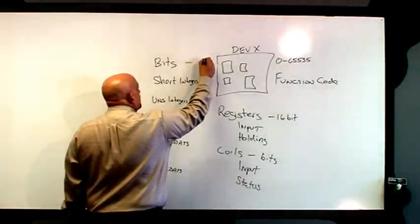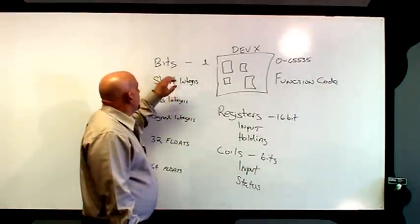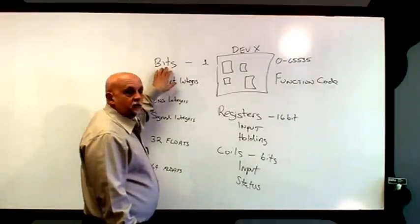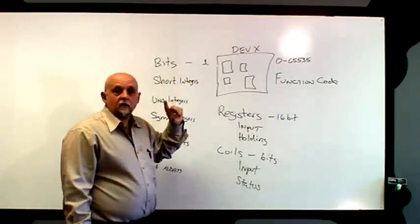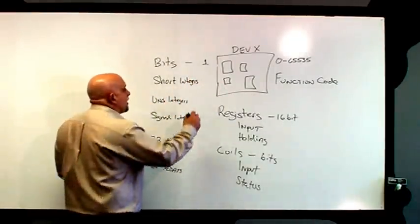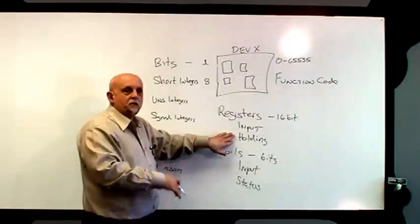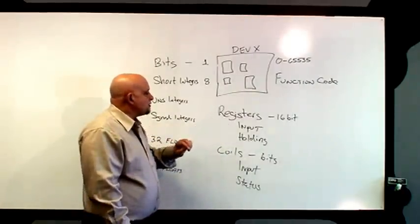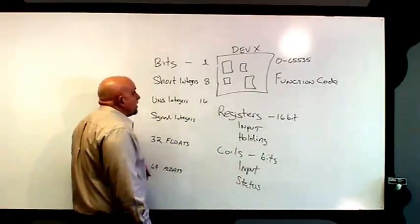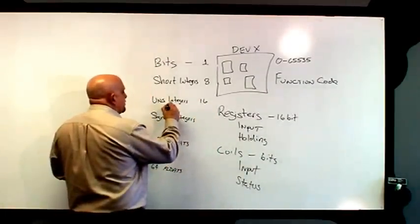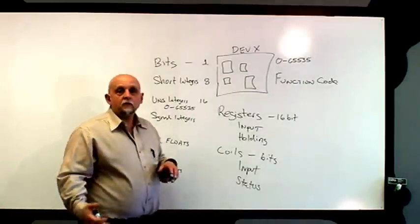Bits, of course, are single-bit and easily map into the coil space. So if you've got something like a relay you're going to turn on and off, you can represent it as a space a Modbus master can access by just allocating a coil — no problem. Short integers are actually 8 bits, so they fit into a register with the top half of the register always being zeros — no big deal. Unsigned integers are 16 bits, and an unsigned register goes from 0 to 65,535, so that's no problem to store there.